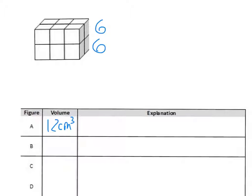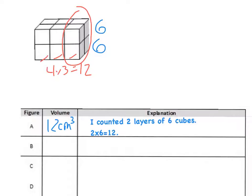Alternatively, I could have looked at the side here and saw that there were 4 in a layer. And that I had 1 layer, 2 layers, 3 layers of that. Or 4 times 3 also gives me my 12 centimeters cubed. For my explanation, I just said I counted 2 layers of 6 cubes and 2 groups of 6. 2 times 6 is 12.